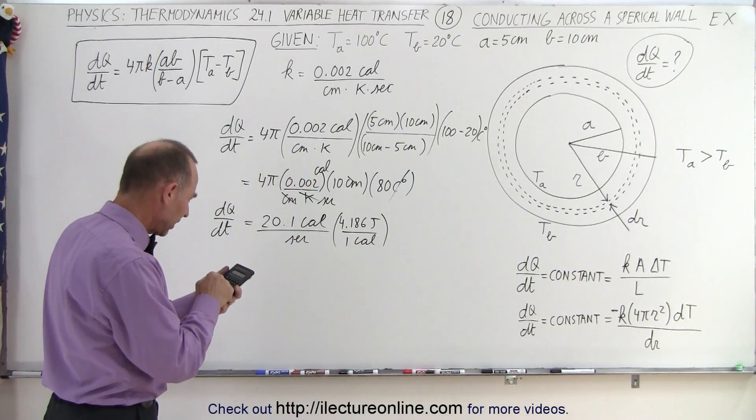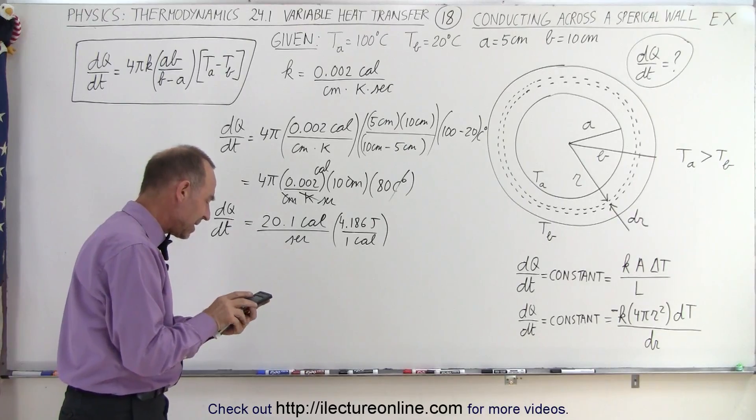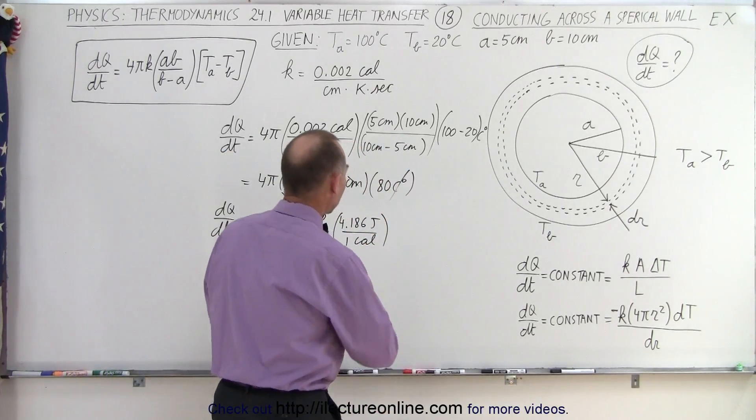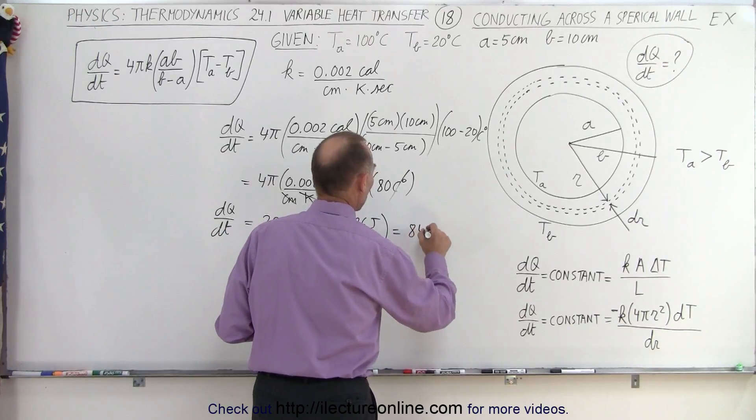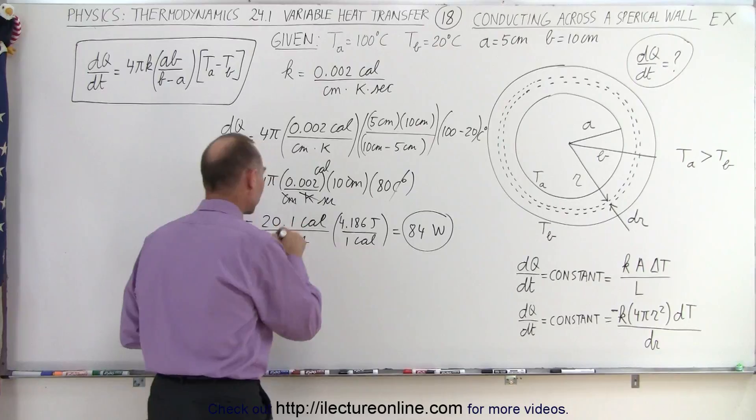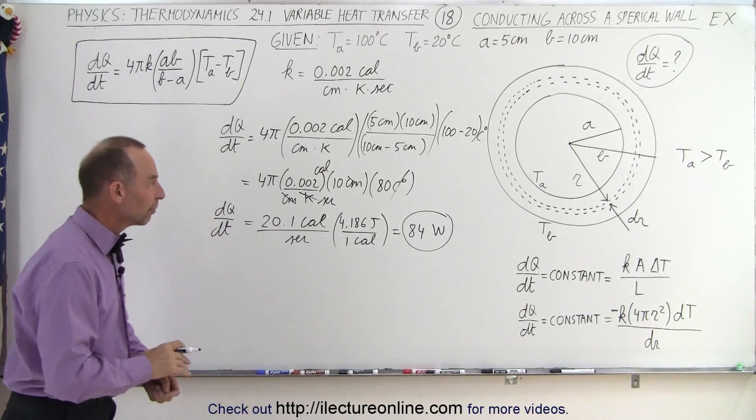we can say that times 4.186. That gives us 84, a little bit over, about roughly 84 joules per second or watts. So we can express in terms of watts, we can express in terms of calories per second.